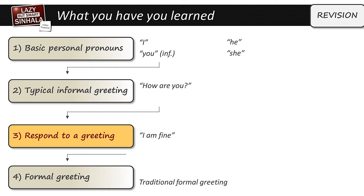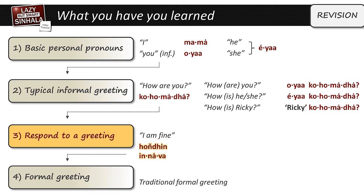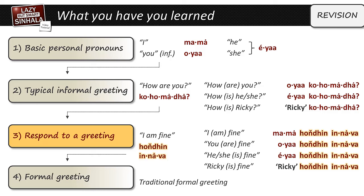Let's recap what you've learned. 'I' in Sinhala is mama. Informal 'you' is oyaa. The one word for both 'he' and 'she' is ea. You know an easy way to ask 'how are you': kohomadha — and with a pronoun: oyaa kohomadha. How is he or she: ea kohomadha. How is Ricky: Ricky kohomadha. To respond, 'I am fine' is honding innova, or mama honding innova. 'You are fine' is oyaa honding innova. 'He or she is fine' is ea honding innova. 'Ricky is fine' is Ricky honding innova. The traditional formal greeting is ayubo wan, and the correct response is also ayubo wan.